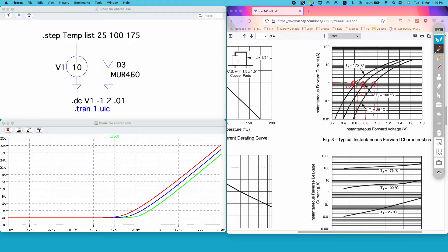So as temperature increases, the forward voltage drop of the diode decreases. This phenomenon you can easily study in the LTSpice environment.